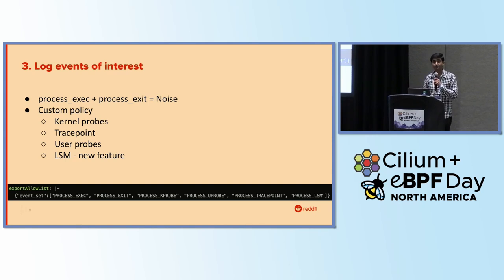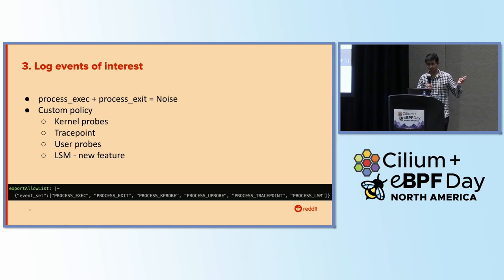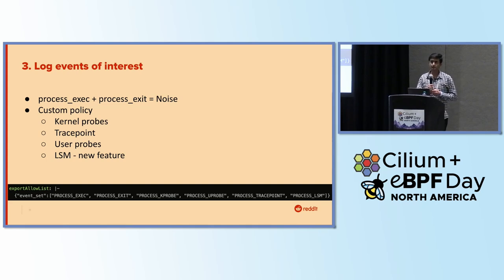For all custom or default policies you enable, you'd want to consider using other types of events such as kernel probes, tracepoints, and user probes. LSM, which is Linux Security Modules, is the newest feature addition to Tetragon. I haven't tested it extensively, so I can't say definitively whether you should use it or not.